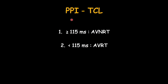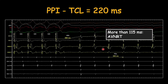Based on this difference between post-pacing interval and tachycardia cycle length we can differentiate between AVNRT and AVRT. When this difference is greater than or equal to 115 milliseconds it goes in favor of atrioventricular nodal reentrant tachycardia, i.e. AVNRT. When this difference is less than 115 milliseconds it goes in favor of atrioventricular reciprocating tachycardia. In this case the difference is more than 115 milliseconds, hence it goes in favor of AVNRT and excludes AVRT.